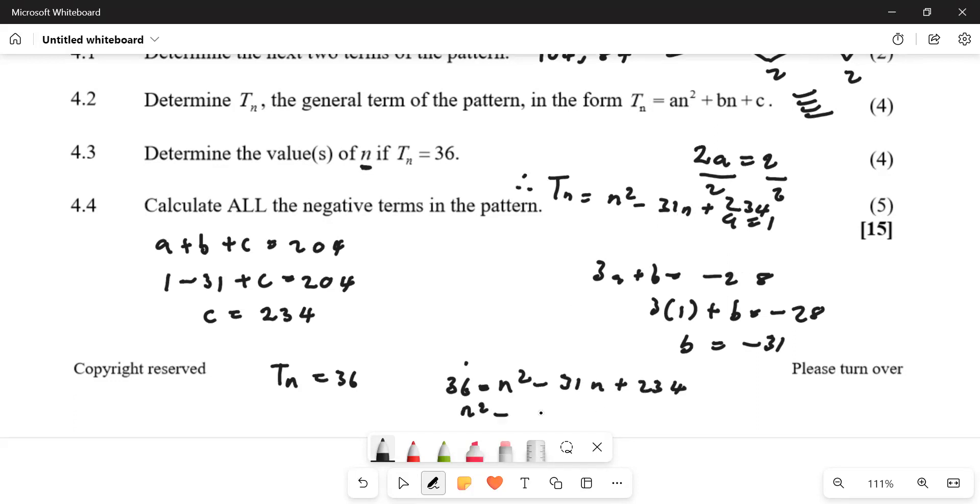Then you get n squared minus 31n. Then this one minus 234 minus 161, 191, plus 198. So then use minus b plus or minus b squared minus 4ac divided by 2a. And how you found it?